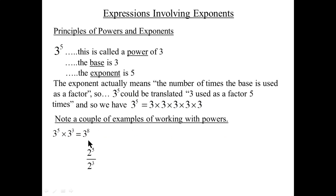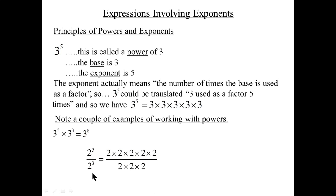Let's do another one: two to the fifth divided by two to the three. Fractions are division questions, so this is two to the fifth divided by two to the three. The exponent means the number of times two is used as a factor: two used as a factor five times over two used as a factor three times. We can cancel three pairs, leaving just two times two — which is two to the two.